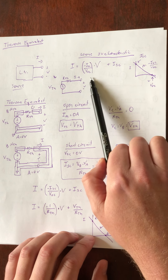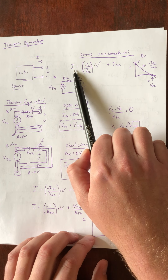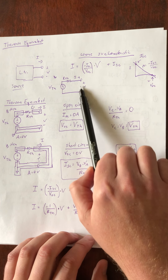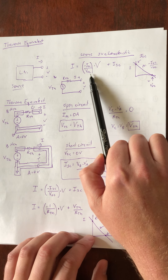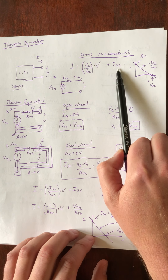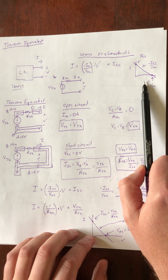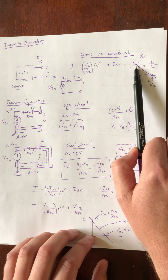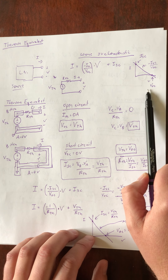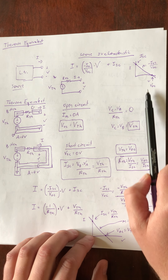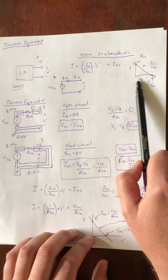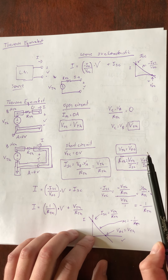Just a little review from last time: we looked at the source IV characteristic and found that the IV characteristic line is given by the equation that the current equals the short circuit current minus the ratio of short circuit current to open circuit voltage, multiplied by V — giving us a negative slope. The Y-intercept is the short circuit current and the X-intercept is the open circuit voltage. The slope of the line is negative ISC over VOC.